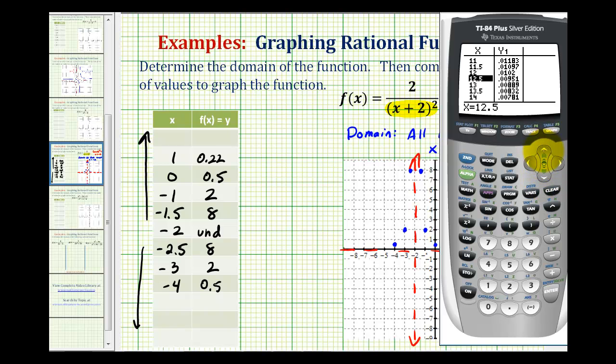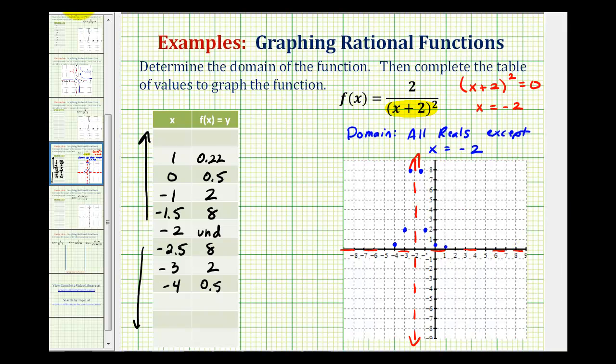And the same is true if we let x decrease to the left on our graph here. Notice once we pass the vertical asymptote, y begins to decrease and again approach zero to the left as well. So our graph would look something like this. So again, we had a horizontal asymptote of y equals zero and a vertical asymptote of x equals -2.